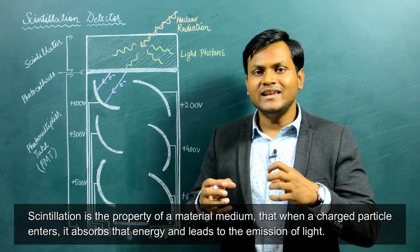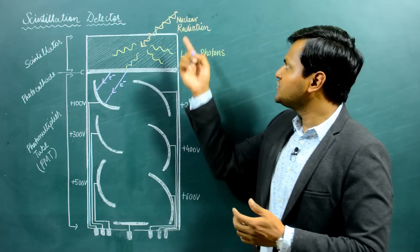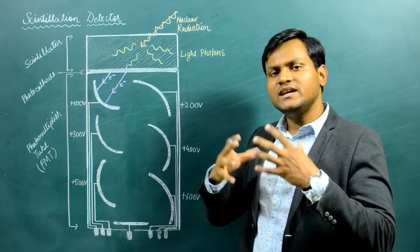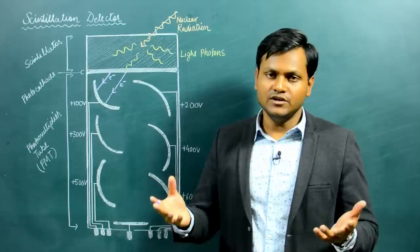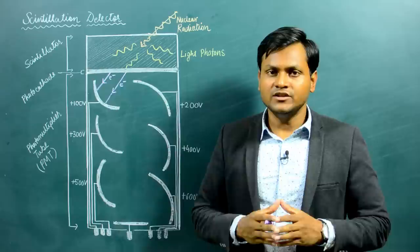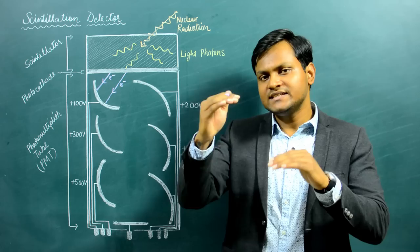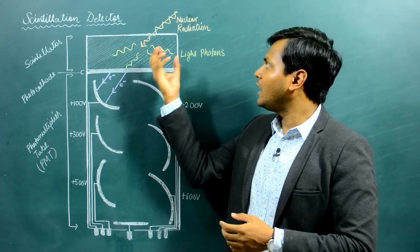When some external nuclear particle — let's suppose an alpha particle — enters a scintillator medium, it collides with the molecules of the material medium. Every time a collision happens, it transfers energy to the material medium. The electrons in the valence band absorb that energy and jump to the conduction band. Every time electrons jump back from the conduction band to the valence band, a particular photon is emitted — a de-excitation event. So the material medium absorbs the energy of the incident particle and converts it into low-energetic photons.